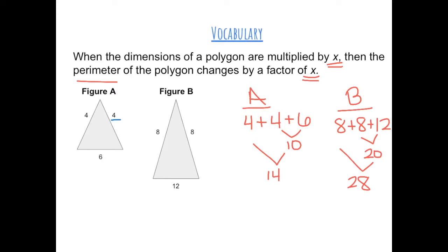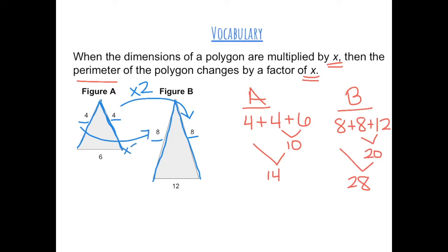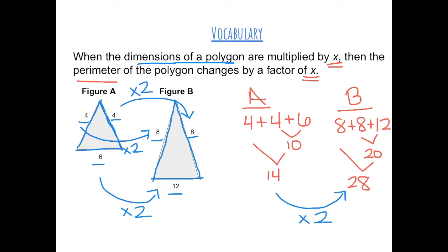If we notice, each side in figure B is twice the amount in figure A. This side in figure B is 8 and this side in figure A is 4, so figure B is 2 times greater. Similarly, the bottom of the triangle is 6 in figure A and 12 in figure B, also 2 times greater. So the dimensions of polygon A are multiplied by a factor of 2 to get figure B, and the perimeter is also multiplied by 2.